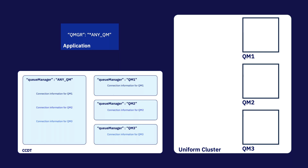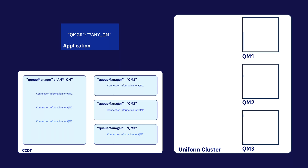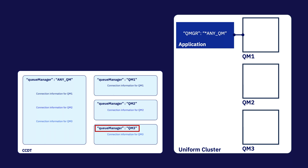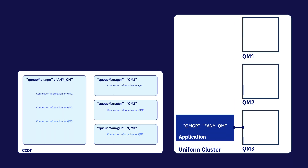Here we can see our application has specified *anyqm as the queue manager it wants to connect to. It looks in the CCDT for the connection information corresponding to that queue manager and finds the anyqm connection list. Within this there is the connection information for QM1, QM2, and QM3, and the application will attempt connections to each one starting from the top. In this case it was able to connect to QM1 and is now successfully connected to the uniform cluster. Later, as part of balancing, the application is asked to reconnect to QM3, so it looks in the CCDT for a channel definition with queue manager name QM3 and uses the connection information found there to reconnect.